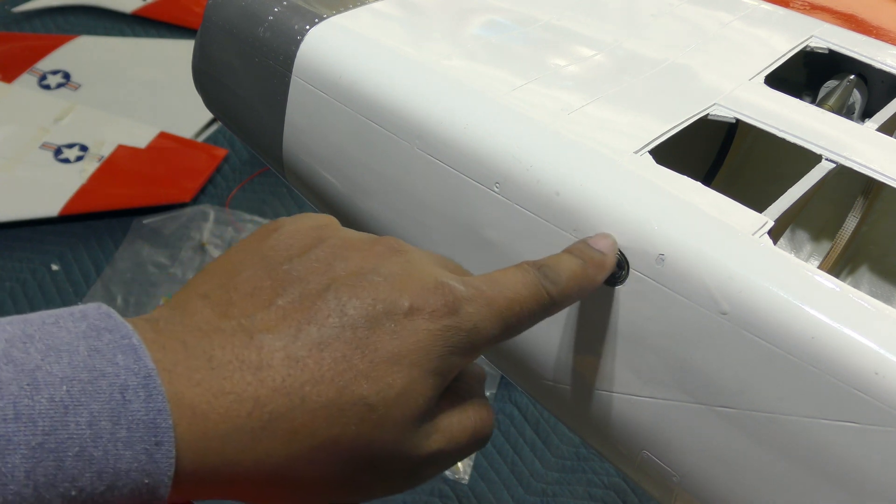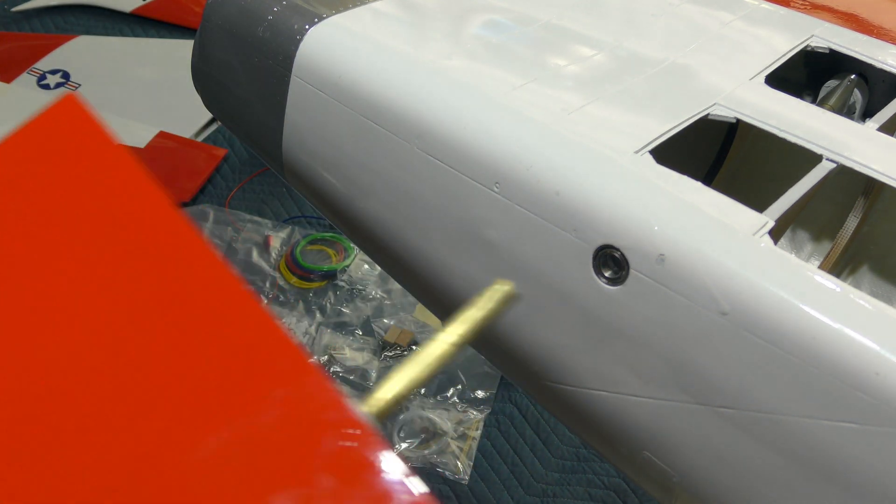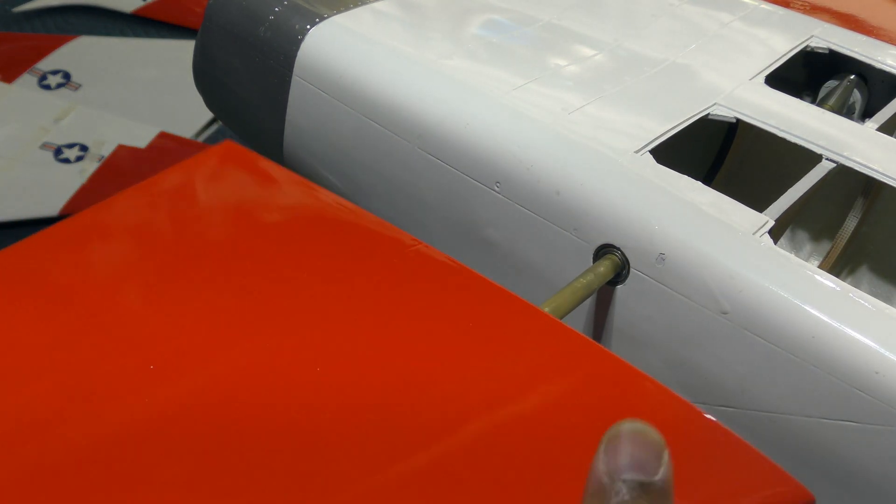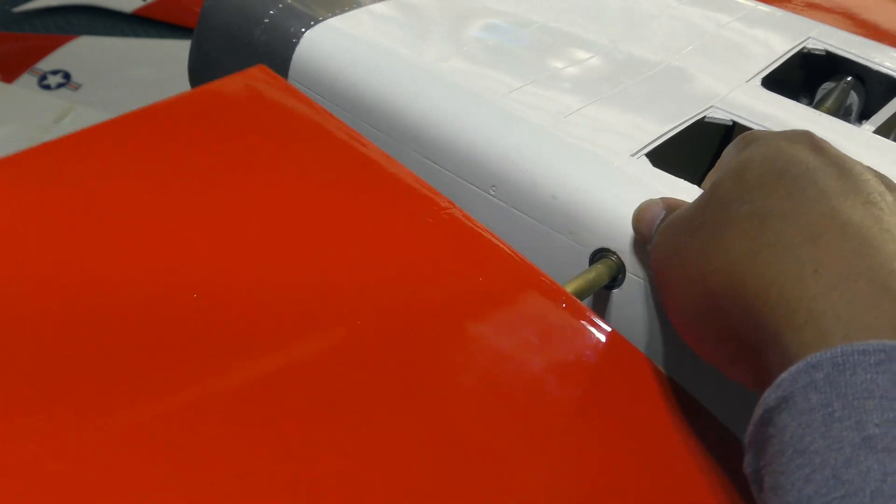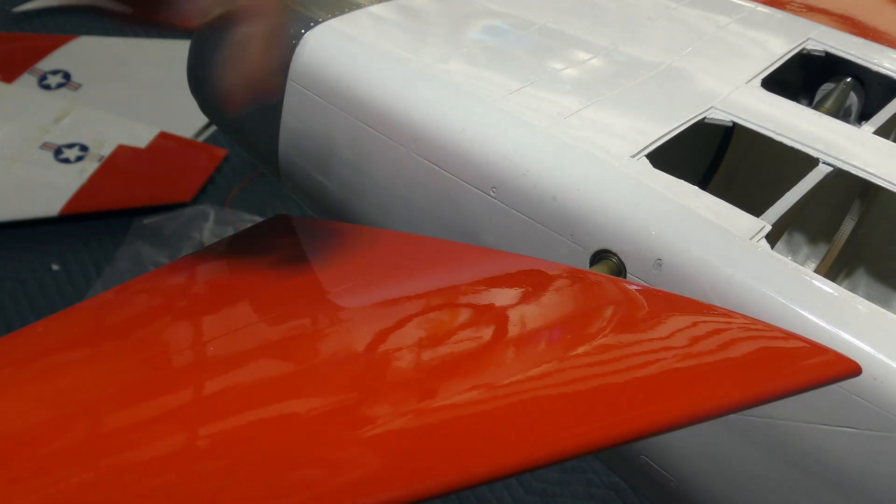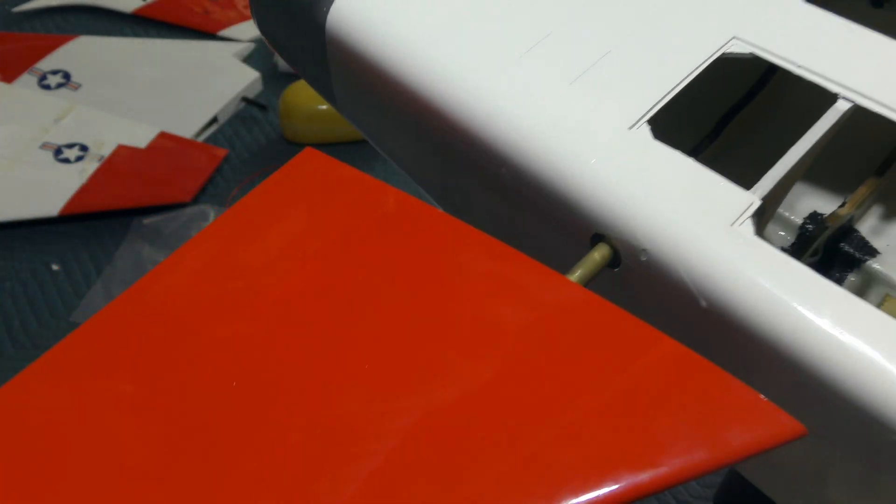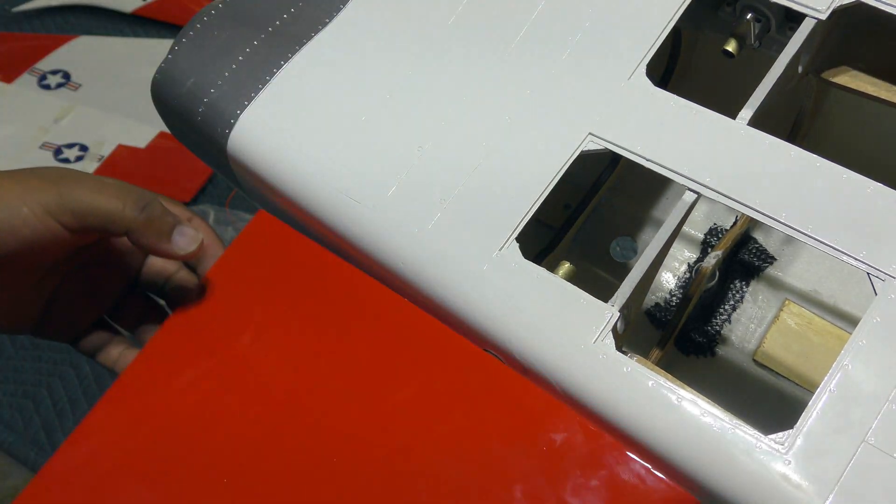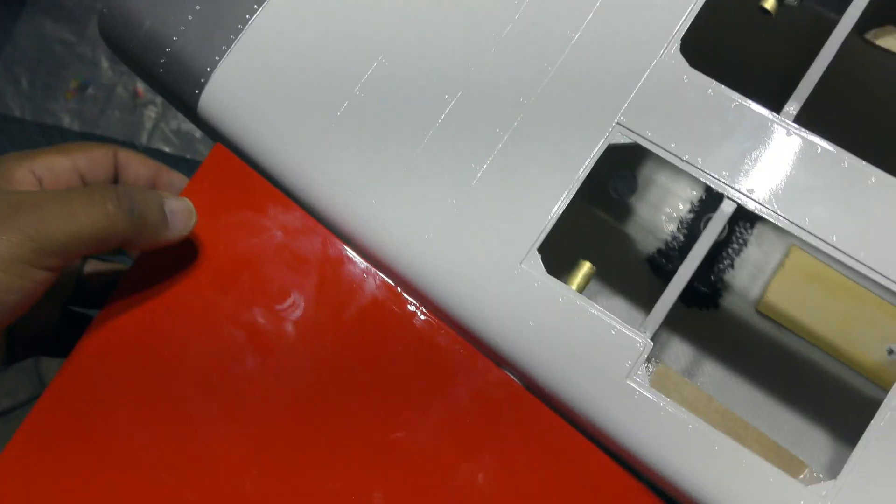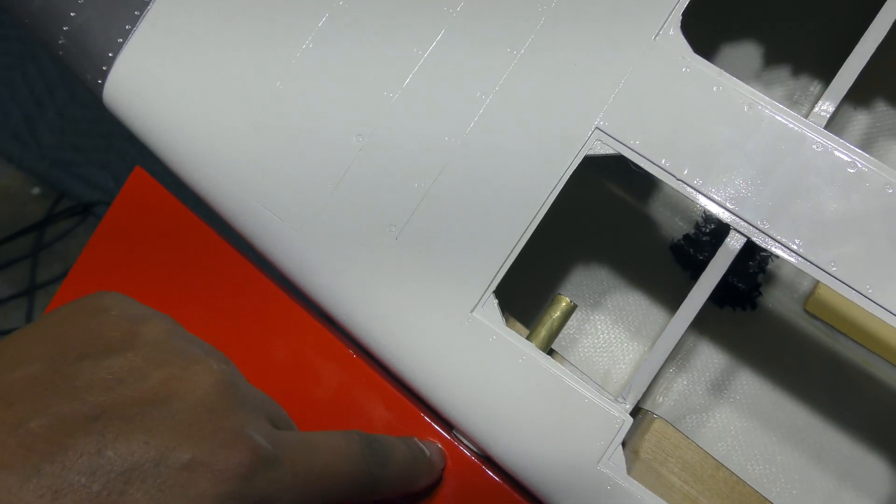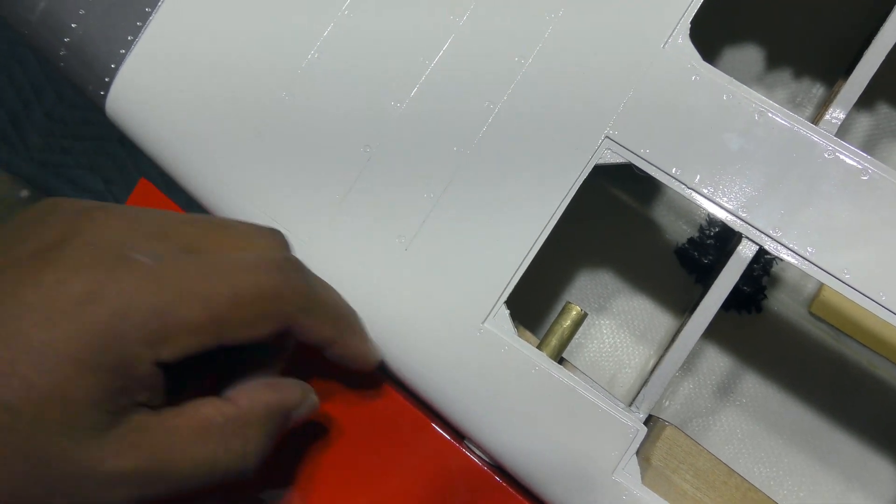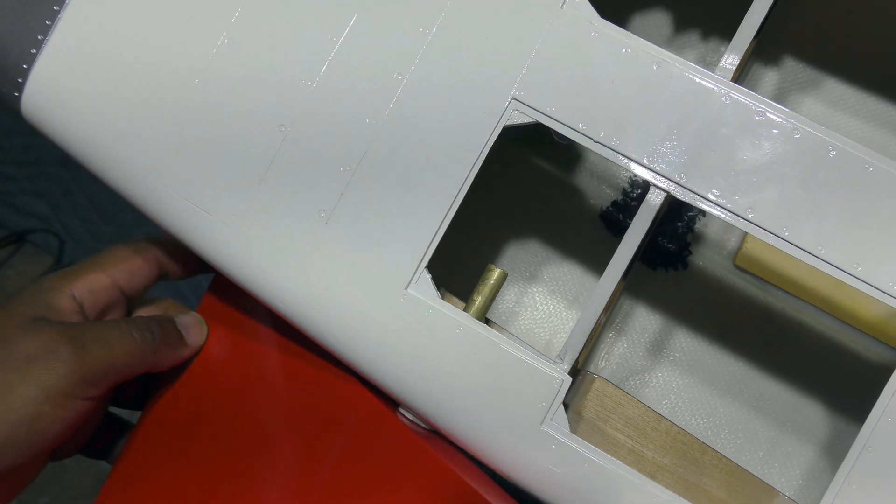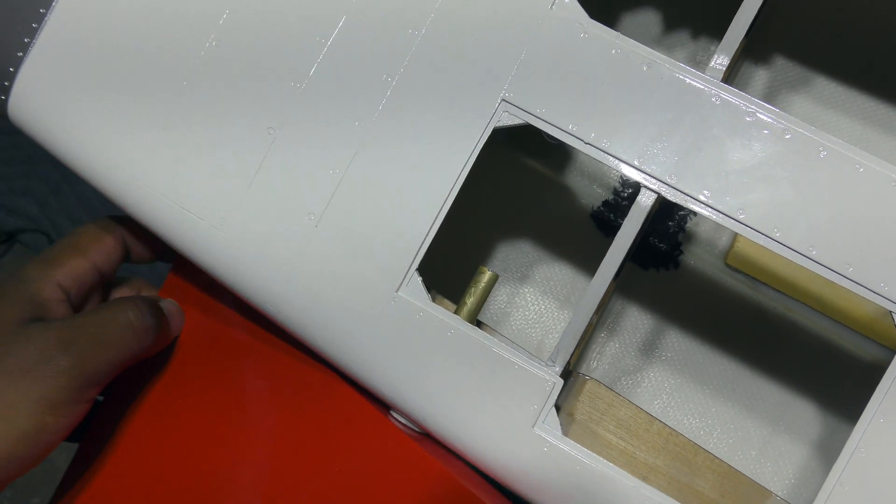I'm going to insert that in there. The bearing is already in place. You get four of these in the kit. I used two, one on this and one on the other side. So now this can slide into here. There's another bearing on the inside. That's in place, and you can see that bushing in there. That's sufficient to give me this nice gap around here so that when this rotates, it's not contacting the fuselage at all.